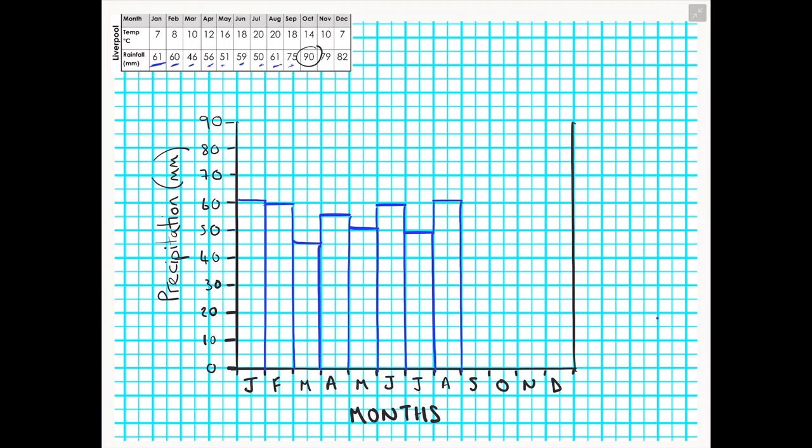As we continue to plot our precipitation onto our climate graph, you will note that I am moving from the left-hand side to the right-hand side axis. By the end, we will have 12 bars showing us the precipitation rates for Liverpool.